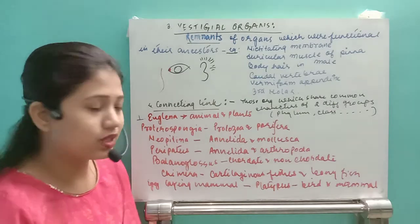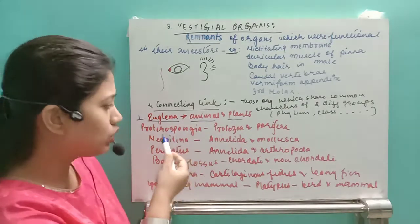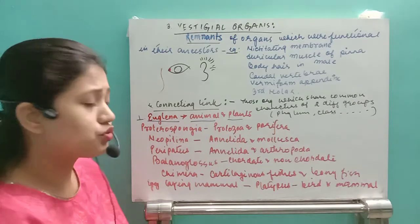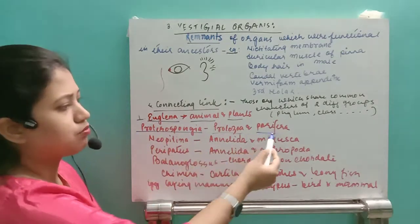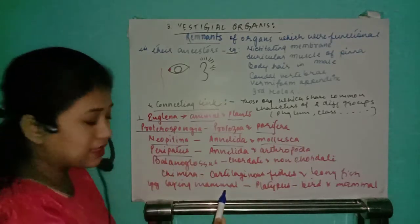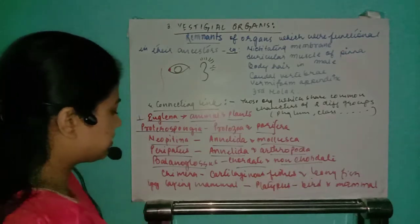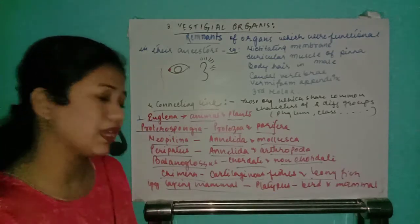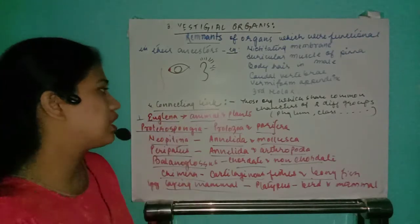The first famous example is Euglena, which is a connecting link between animals and plants, because it has chloroplasts like plants and can also be heterotrophic like animals. Next is Proterospongia, a connecting link between Protozoa and Porifera. Then Neopilina, connecting link between Annelida and Mollusca. Peripatus is the connecting link between Annelida and Arthropoda. Balanoglossus is the connecting link between chordates and non-chordates. Chimera is the connecting link between cartilaginous and bony fishes. Finally, the egg-laying mammal Platypus is the connecting link between birds and mammals.